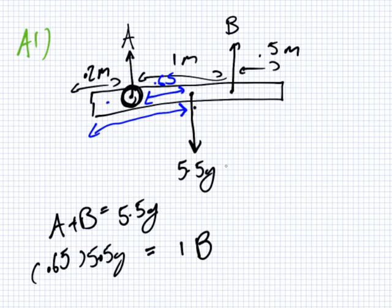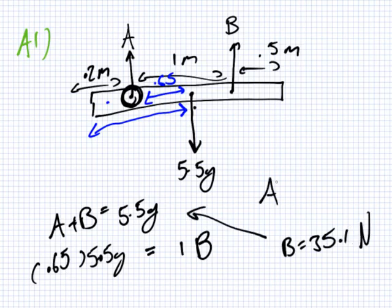So, I can easily, so easily, get the B. The B is 35.1 Newtons. And if I put the B in here, I can get the A. A is 18.9 Newtons. Did you get something like this? No. That's terrible. That's terrible. This is a very straightforward question.